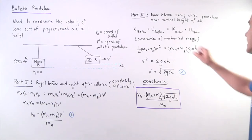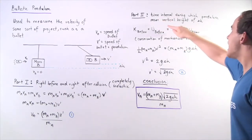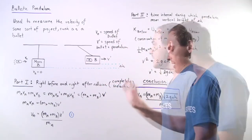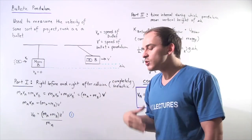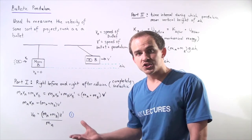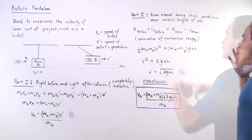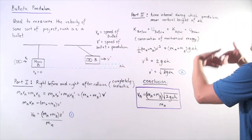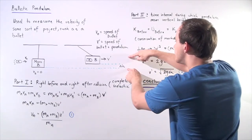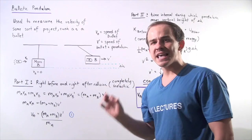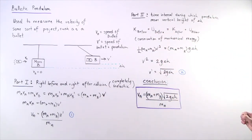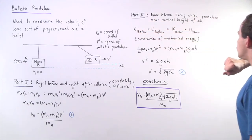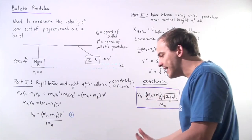In part two, we're examining the time interval during which the pendulum moves a vertical height of change in h. When the pendulum moves this vertical height, the only force acting on our system of objects is the force of gravity. Because gravity is a conservative force, we have conservation of mechanical energy. The sum of kinetic and gravitational potential energy before it begins to move equals the sum after it displaces change in h. Our initial gravitational potential energy is zero and our final kinetic energy is zero, so those two terms cancel out.